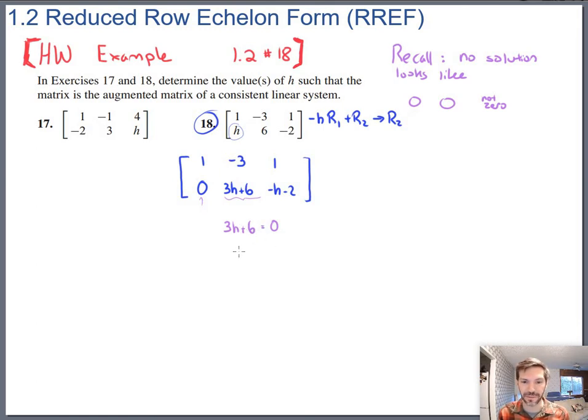So there's a little equation to solve. Subtract 6 from both sides, divide by 3, so you'd get H is negative 2. So our only chance to even get a 0 there and a 0 there is for H to be negative 2.